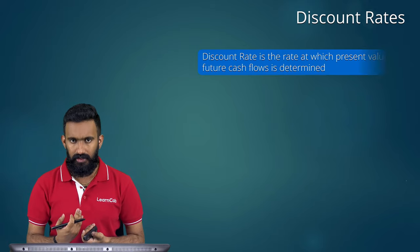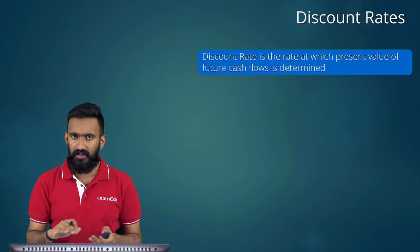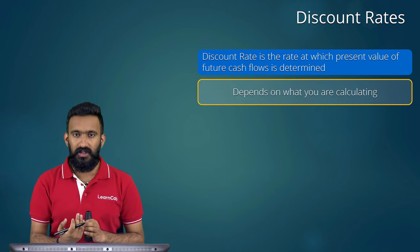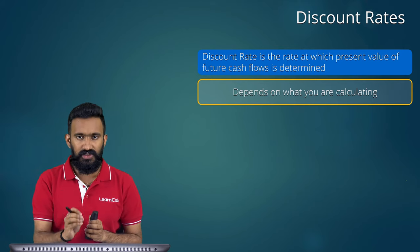Now let's move to the concept of discount rate. All the discussion about returns and equity risk premium feeds into security valuation. To take future returns back to today's value, we apply a discount rate. The discount rate is the rate at which the present value of future cash flows is determined. Depending on whether you're calculating intrinsic value or market price, the discount rate selection differs.